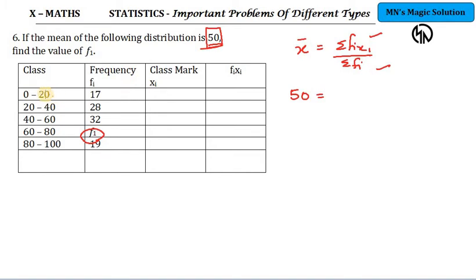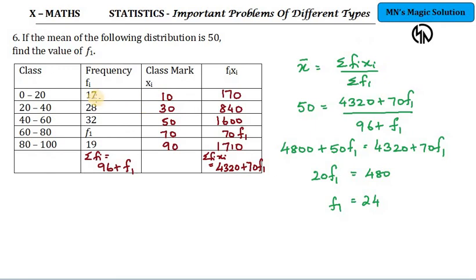The value they have given is 50. So 50 is equal to sigma fi xi divided by sigma fi. Now I have to find these two data. So I have to find the xi. Class intervals are given, so I can find xi. For 0 to 20, it will be 10. For 20 to 40, it's 30. So class marks are the middle values. Class mark times fi, multiply and proceed. So I have found the class marks, fi xi, and sum total of all fi xi together I am getting it as 4320 plus 70f1.